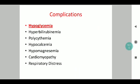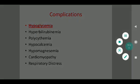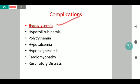The most common complication of an IDM baby is hypoglycemia — hypoglycemia and hypoglycemia — which is why it is highlighted in red. Other complications include hyperbilirubinemia, polycythemia, hypocalcemia, hypomagnesemia, cardiomyopathy, and respiratory distress, but hypoglycemia remains the most common.